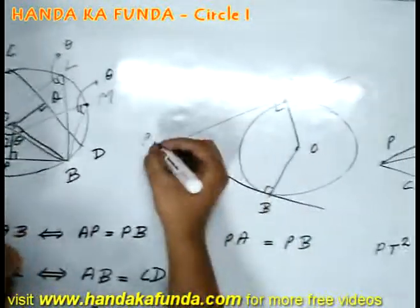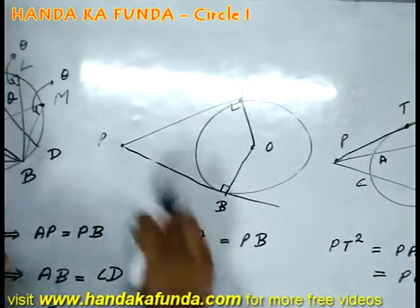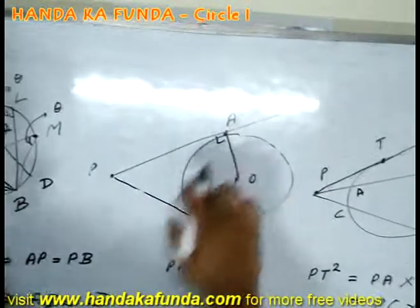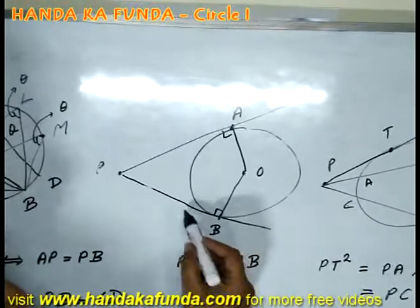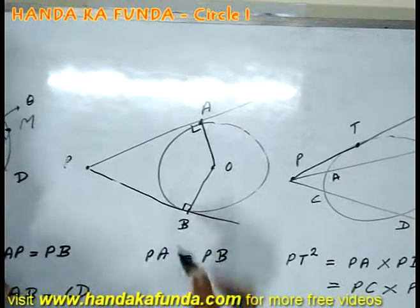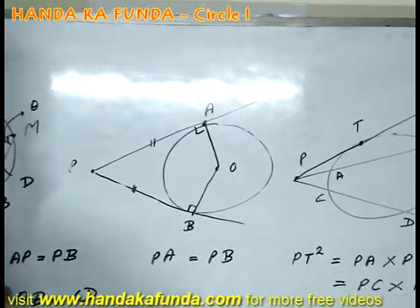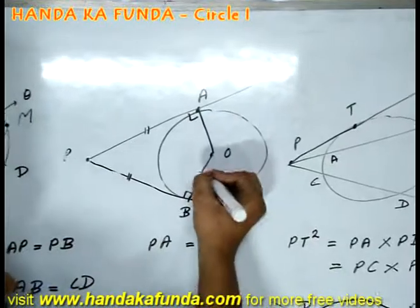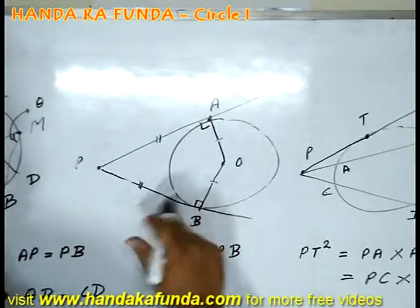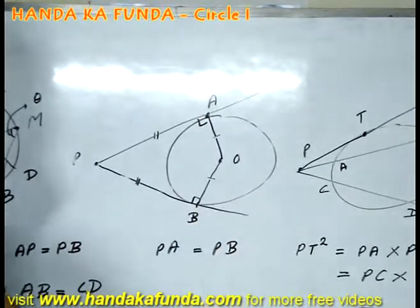Then another point is the tangents. From an external point P, I can draw two tangents. A tangent is a line which just touches the circle. Both the tangents are always equal in length. Another point to note is that the radius and the tangent, they are always at right angles.